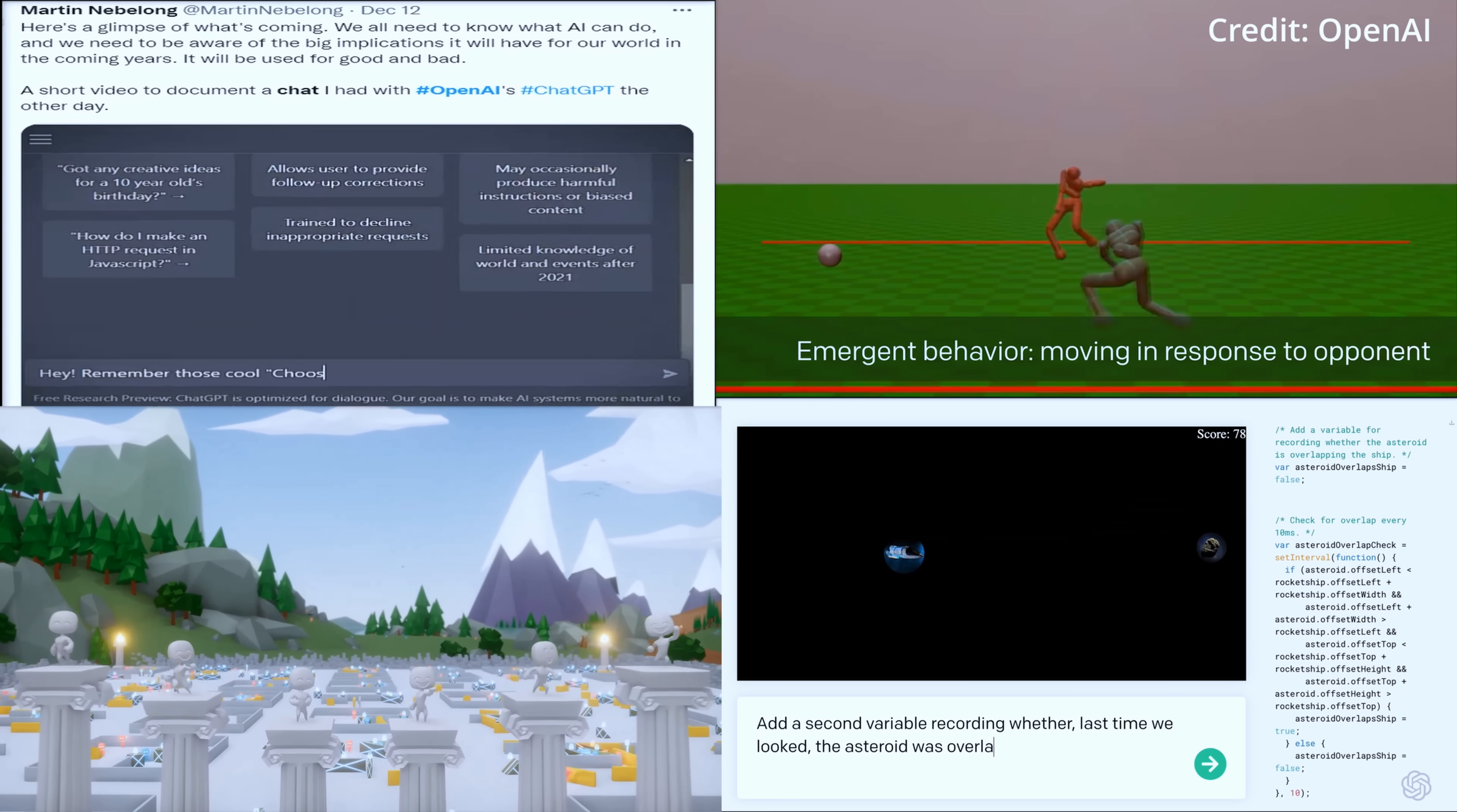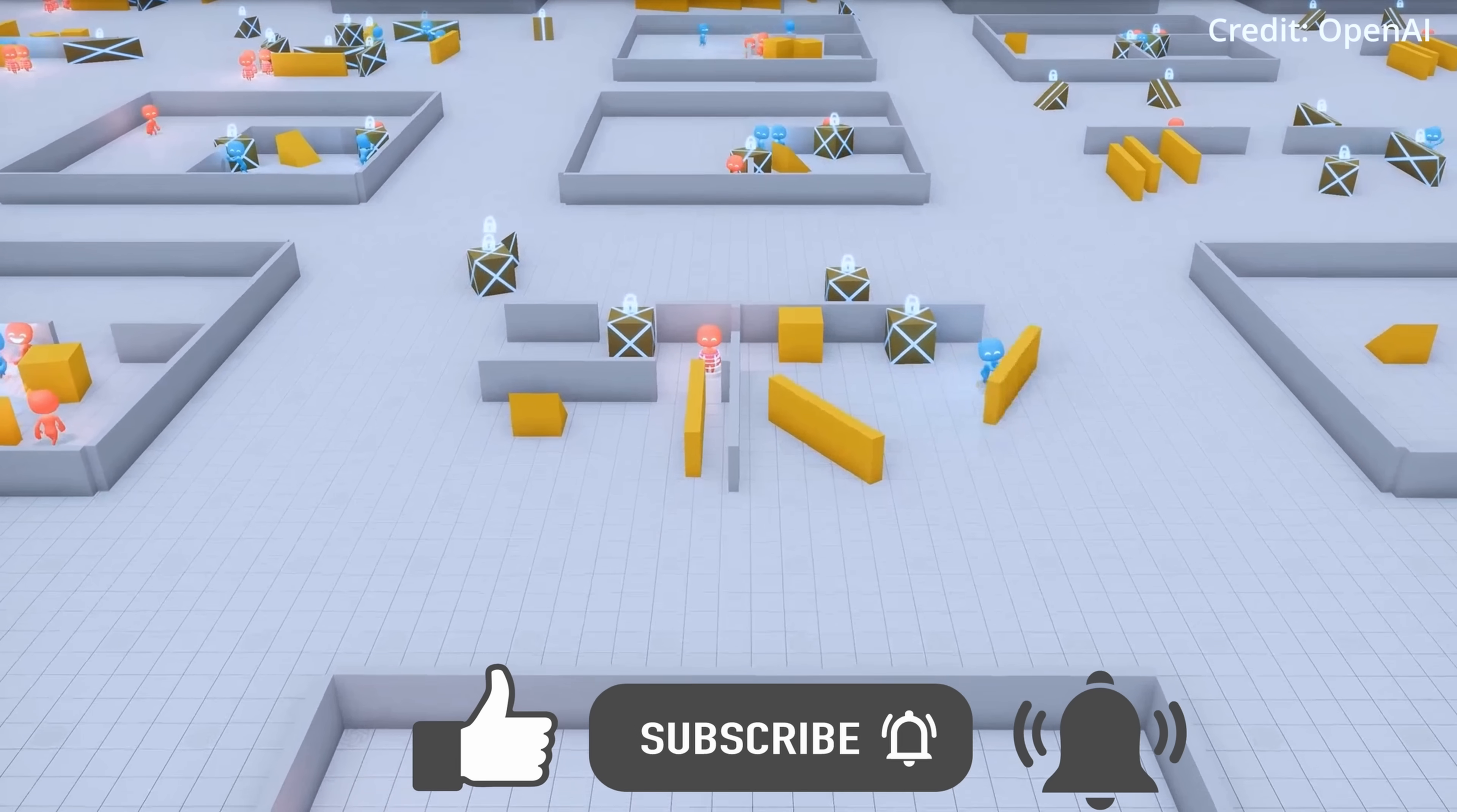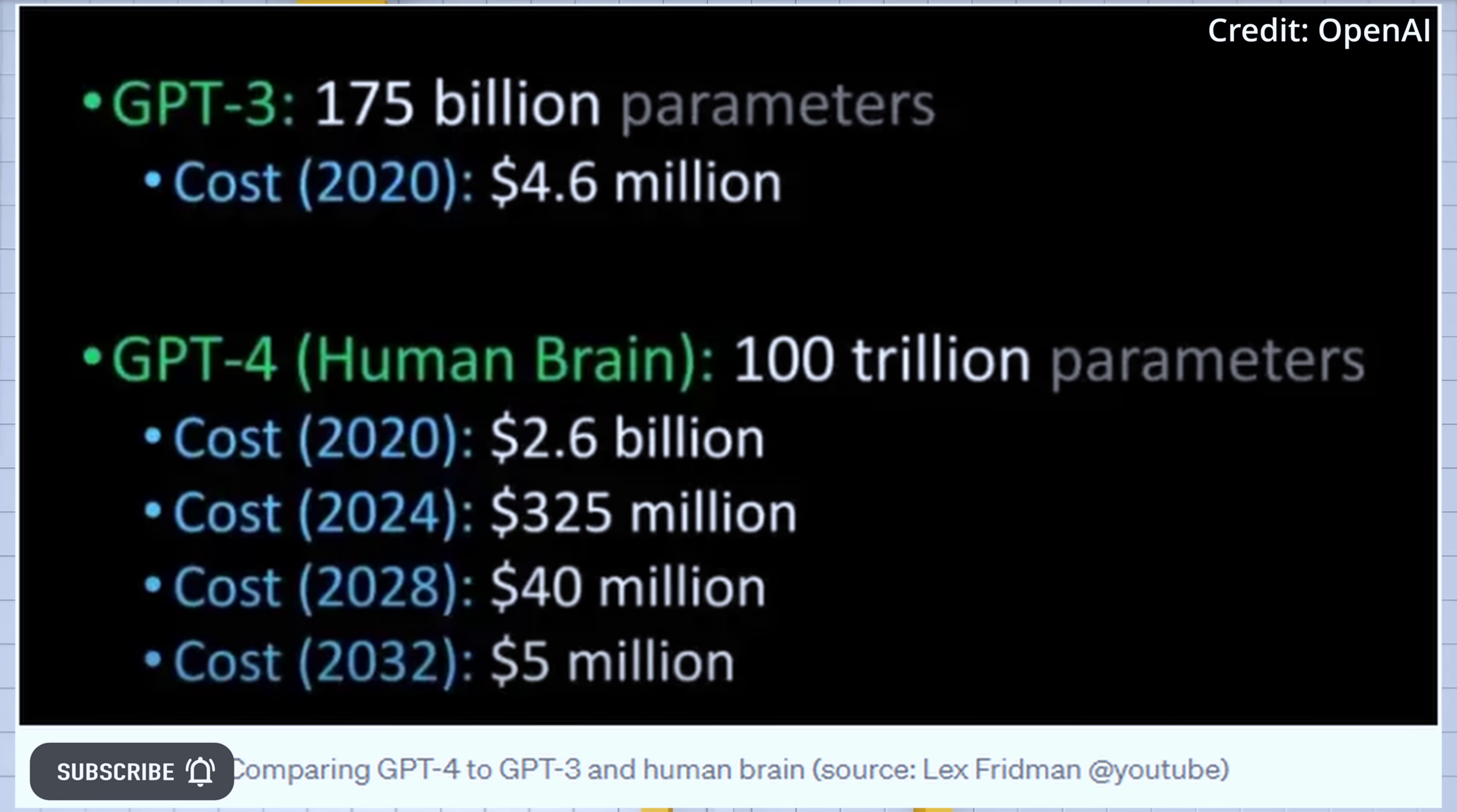Will GPT-4 artificial intelligence be smarter than a human genius? OpenAI's GPT-4 is a next-generation large language model after GPT-3 and ChatGPT, and it's expected to use 100 trillion parameters.